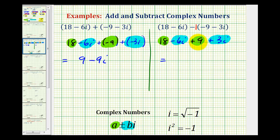So 18 plus 9 is equal to 27, and negative 6i plus 3i equals negative 3i, so we have minus 3i.